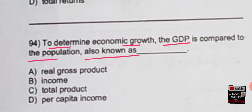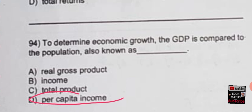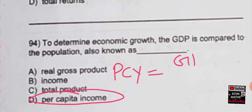The next question: to determine economic growth, GDP is compared to the population — also known as? The options are real gross product, income, total product, or per capita income. Obviously the correct option is per capita income. Per capita income is simply GDP divided by total population.